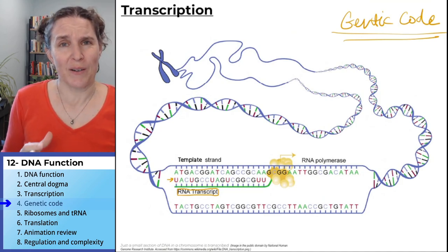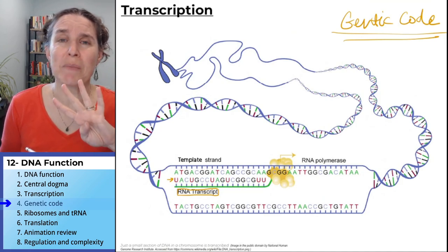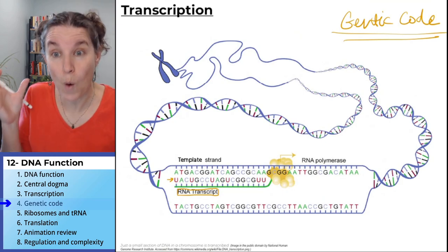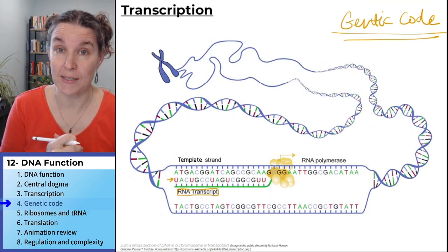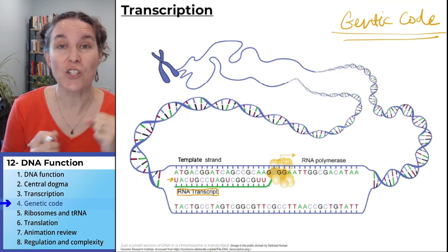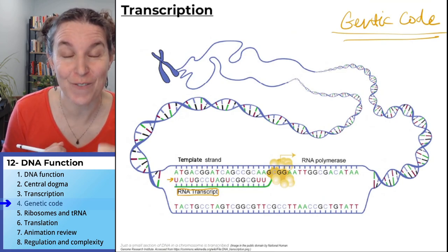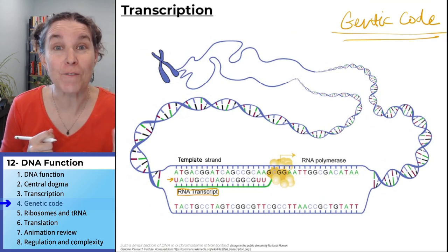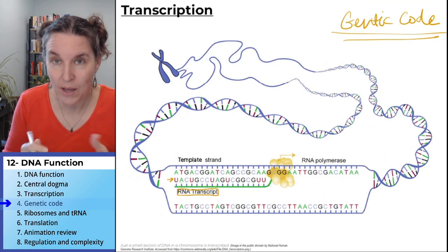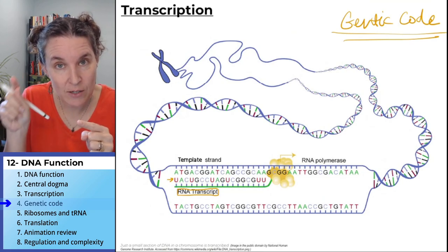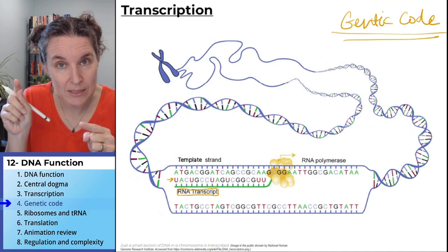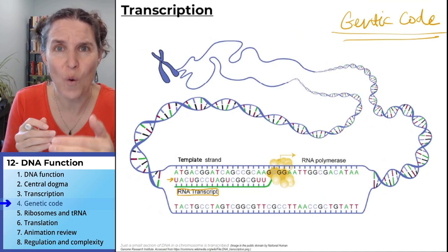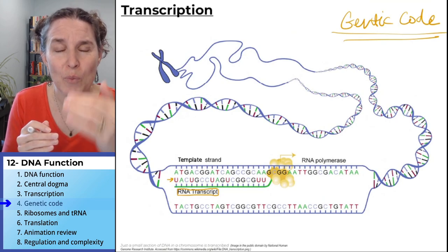Remember that we have four nitrogen bases — that's it. But we have 20 amino acids. It took 10 years for scientists working together to figure out how the sequence of nitrogen bases in this messenger RNA molecule coded for proteins.